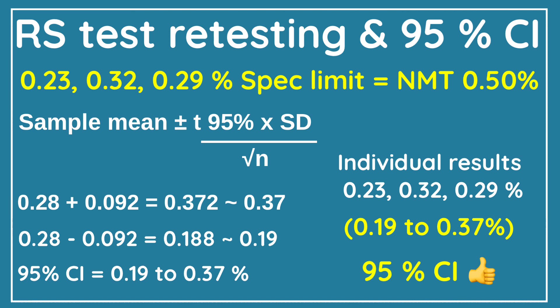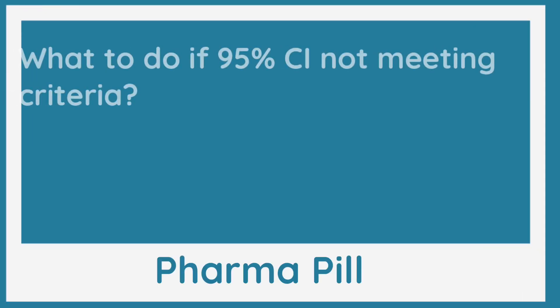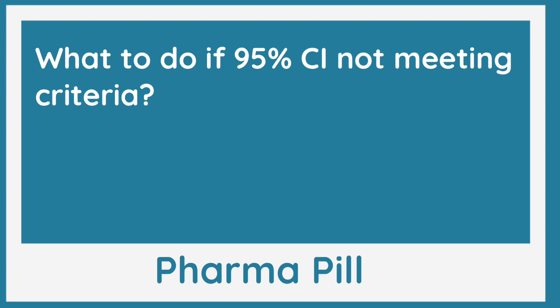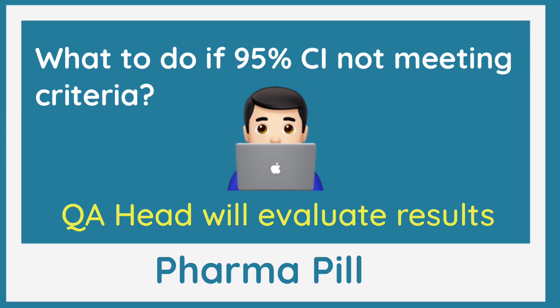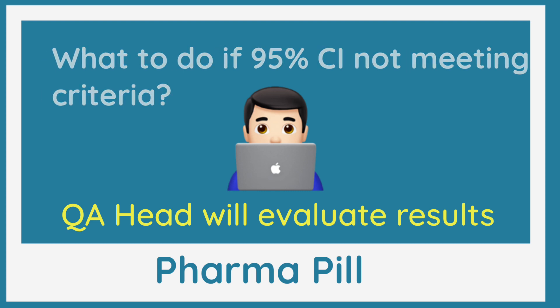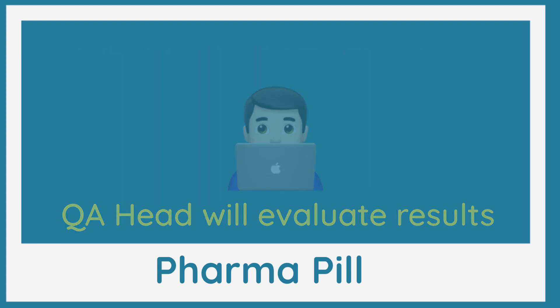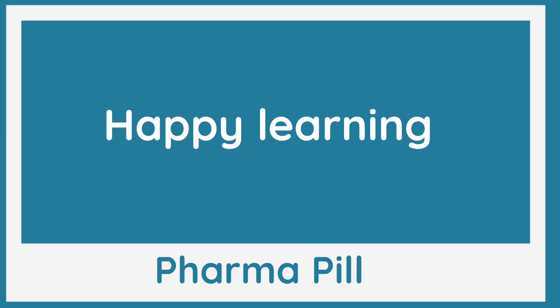The question arises: what to do if any result is not meeting the 95% confidence interval limit? The answer is that if the 95% confidence interval is not meeting for any result, the QA head will evaluate the obtained results and give a further decision. This was all about retesting and the 95% confidence interval limit. Hope you have learned something new today. Bye bye and happy learning.